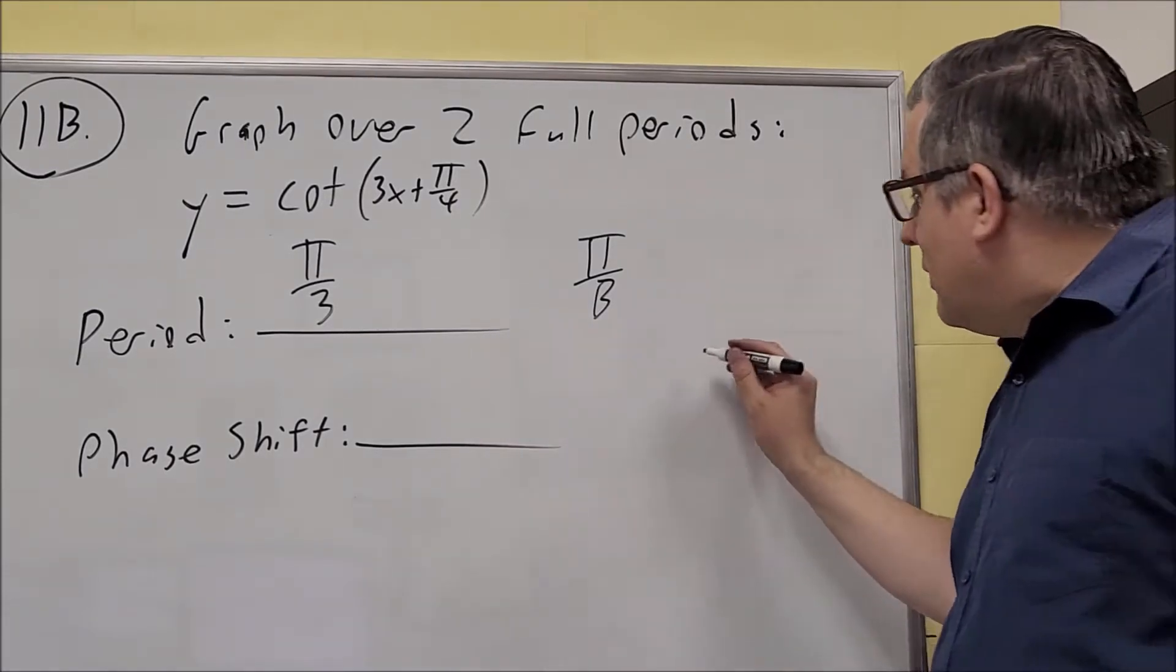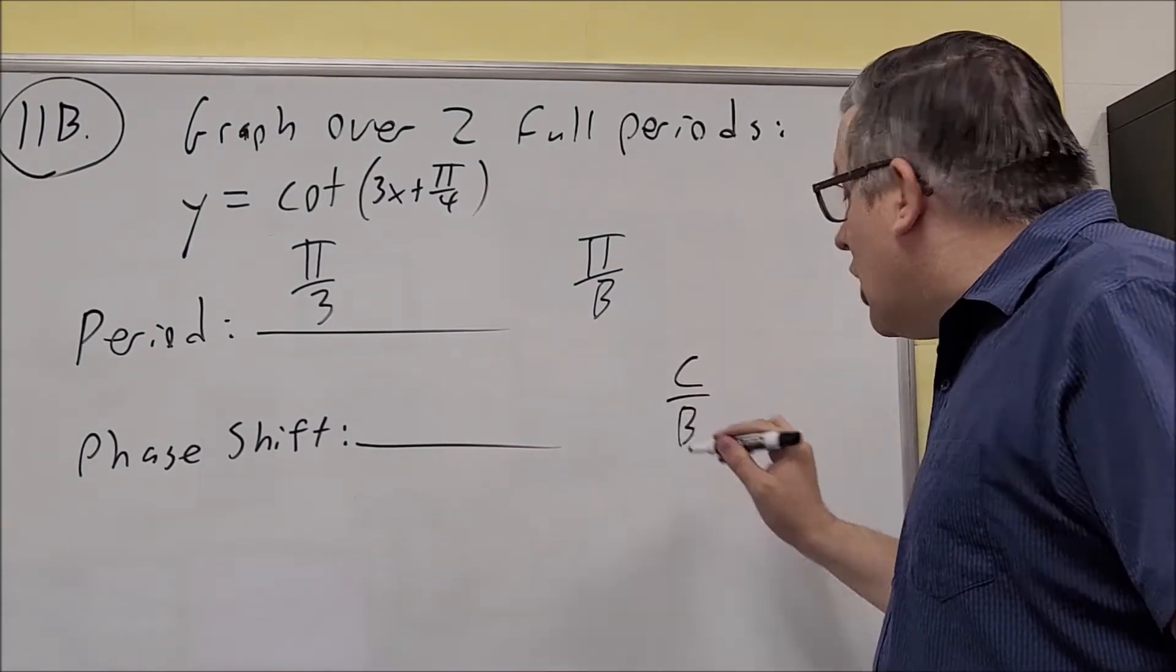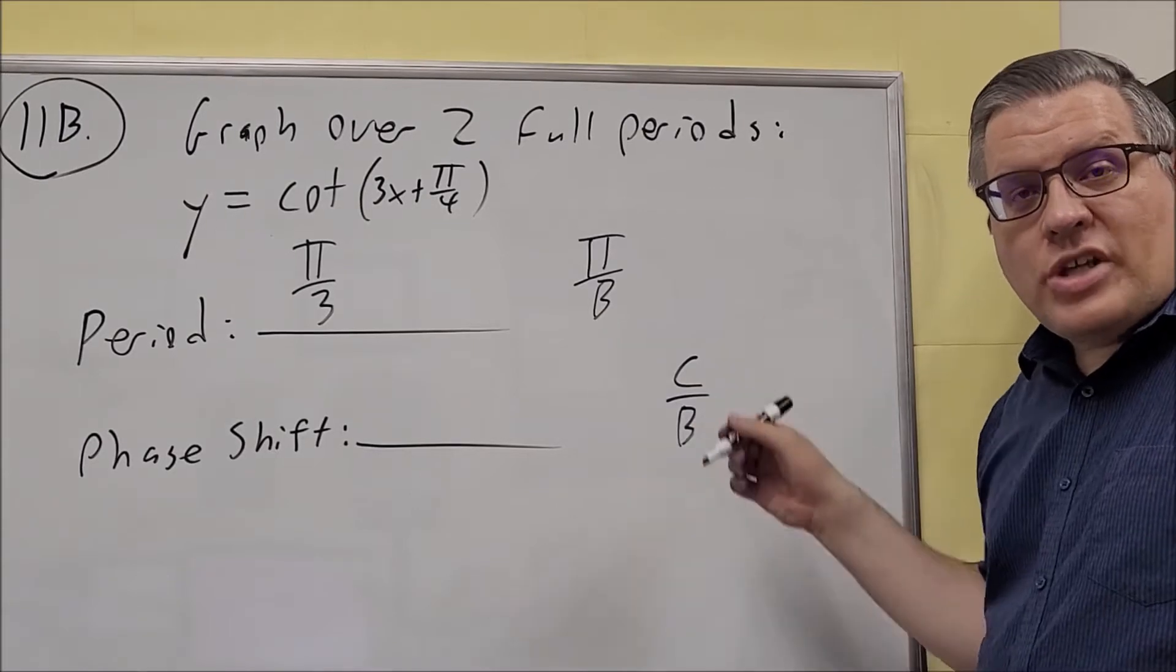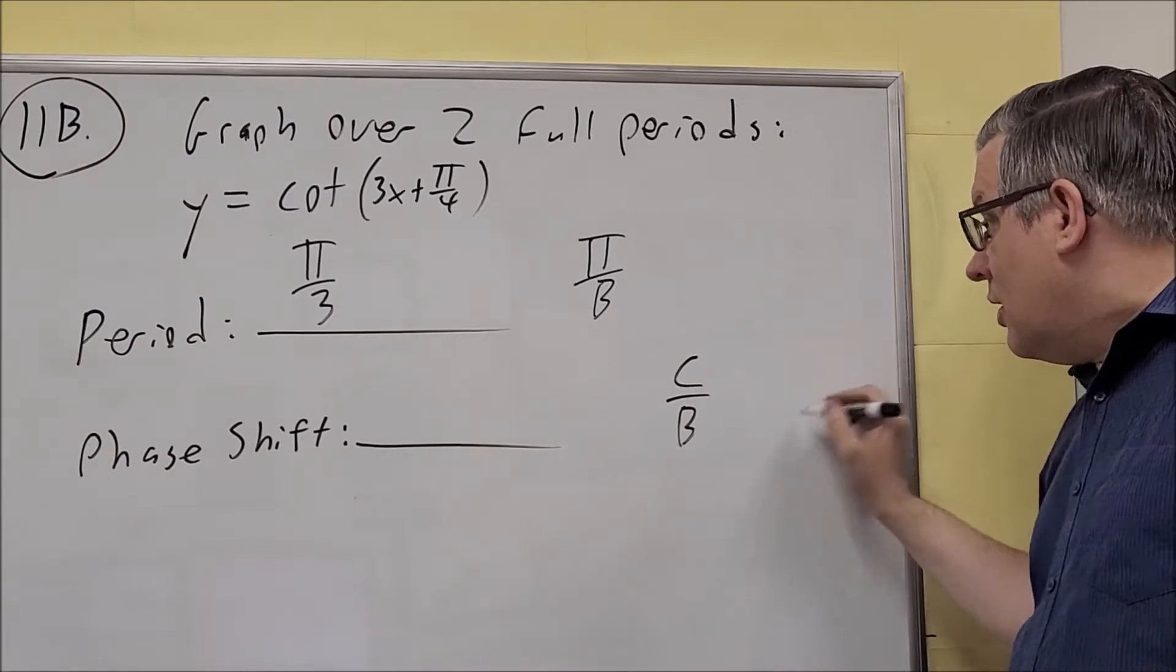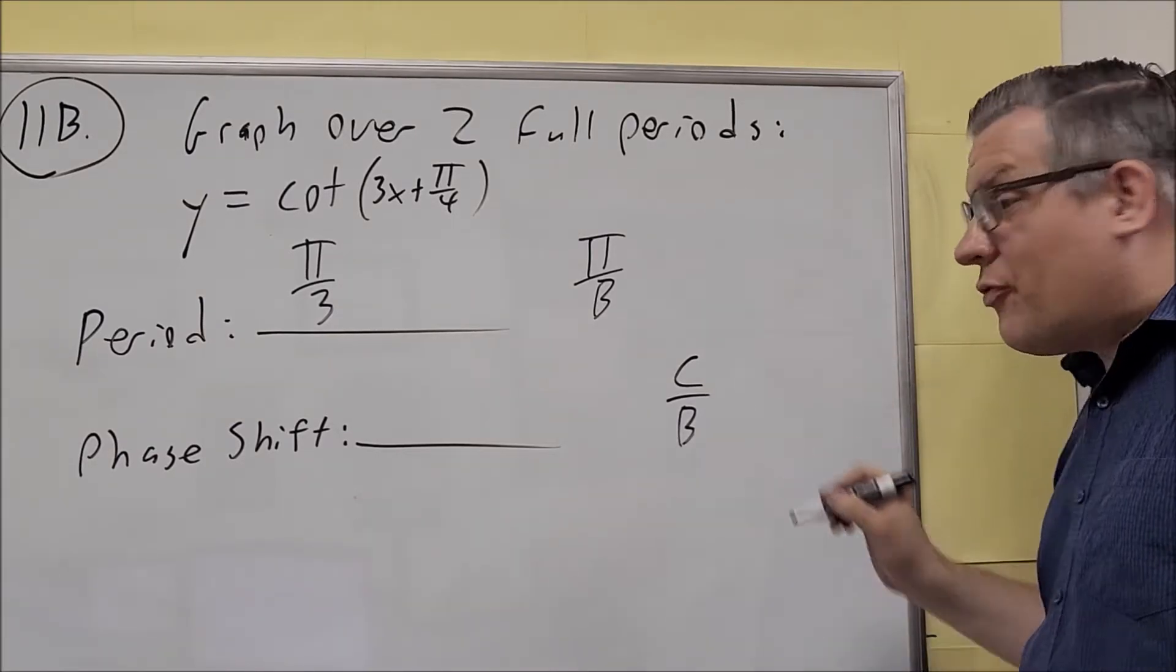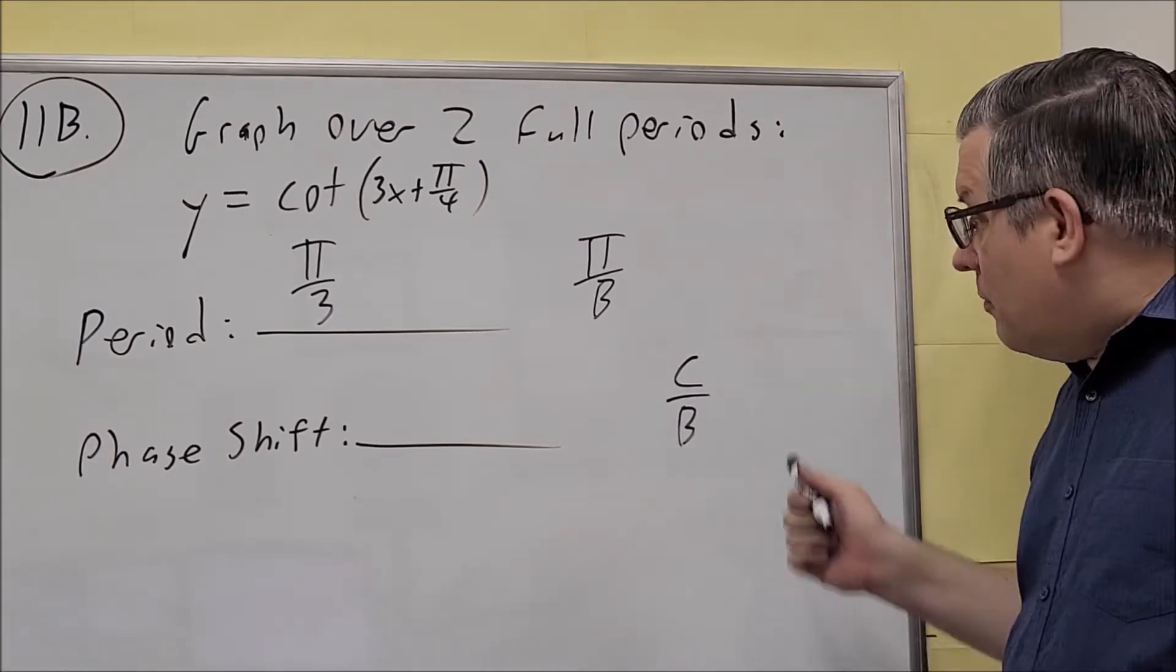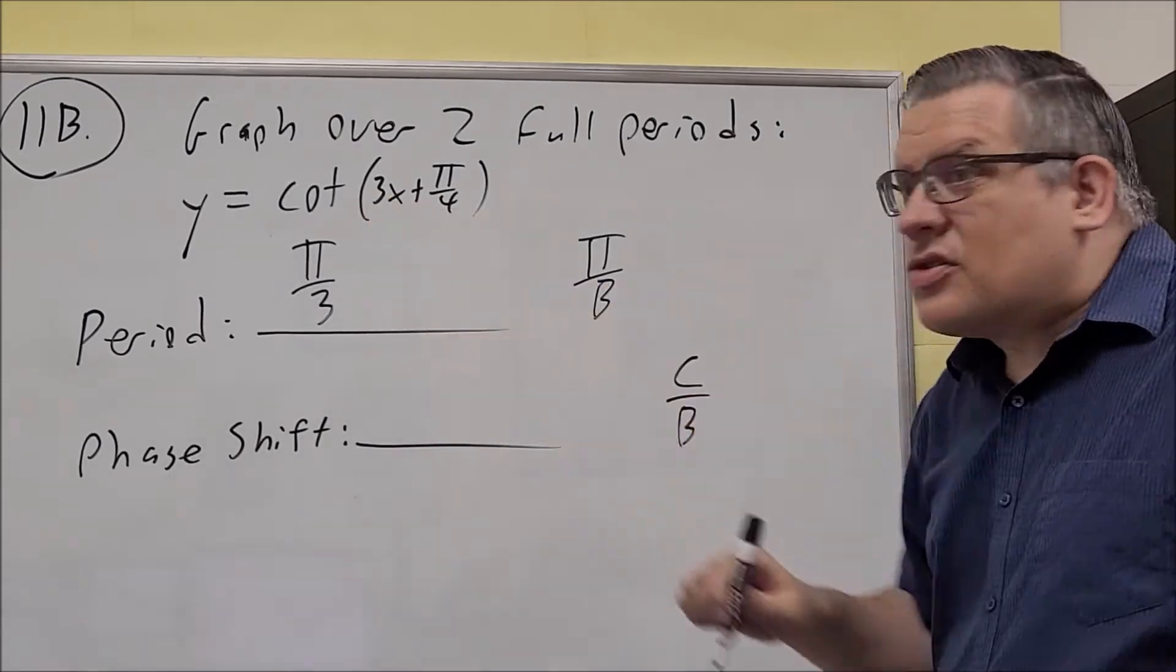For the phase shift, for this problem, it's c over b. Because there's no tangent here, because it's a cotangent, it's just c over b. If it was a tangent, we'd have a minus sign on the end, and we'd have this extra stuff we'd have to do. But this is just c over b only because it's a cotangent graph.